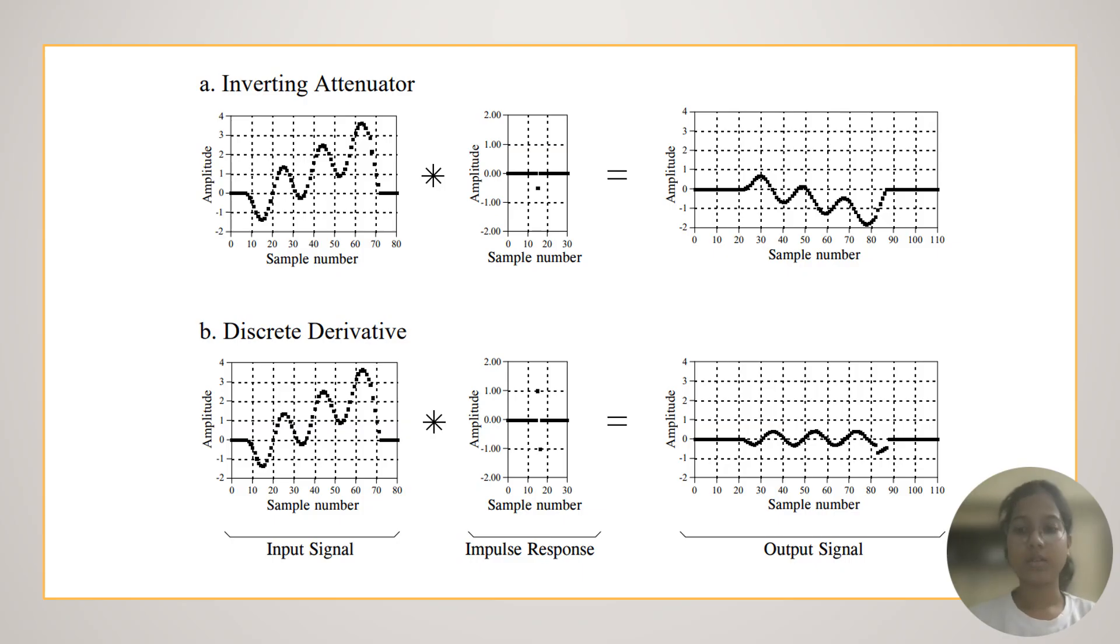Let us understand more about inverting attenuator and discrete derivative through an example. As you can see, we have used the same input function, where the impulse responses of the inverting attenuator and discrete derivative are different. So, when the input signal is convolved with the response function of inverting attenuator, we observe that it basically flips the signal from top to bottom and reduces its amplitude.